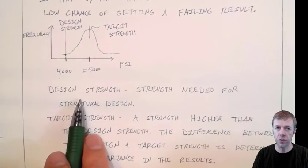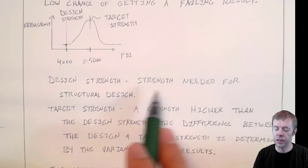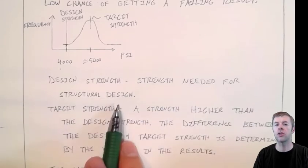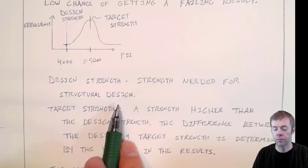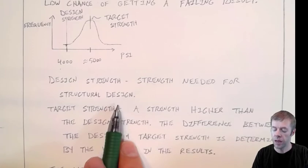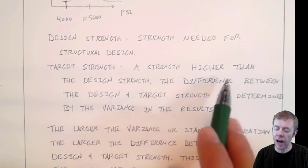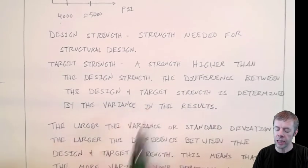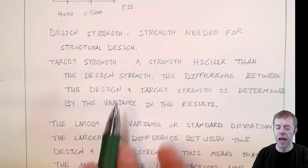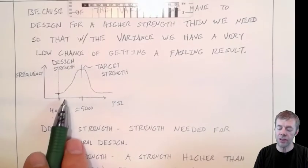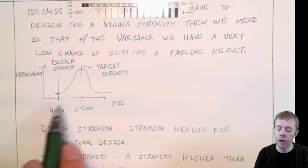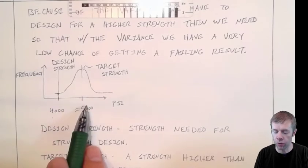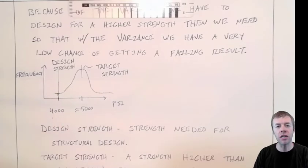Let's get some actual definitions here. The design strength, that's the strength needed for the structural design. That's the strength that the structure needs that comes out from the calculations. Then the target strength, that's a strength that's higher than the design strength. And this difference between the design and the target is going to be determined by the variance in the results. How much we have to over design our concrete is going to depend on how variable it is, what the standard deviation is.